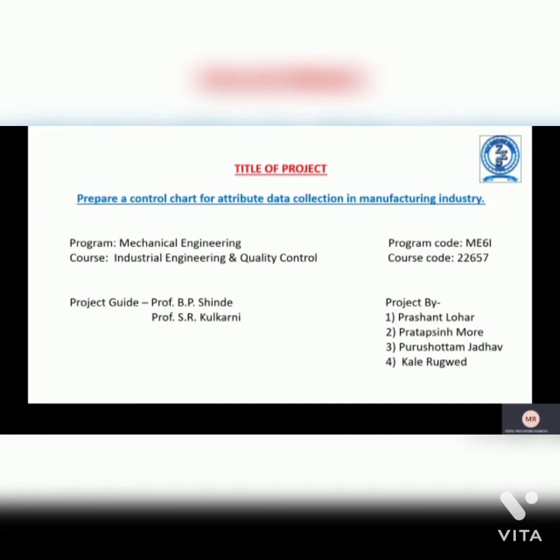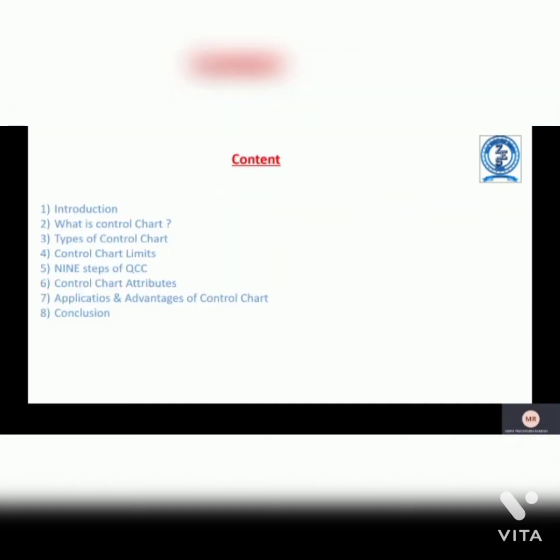Title of project: prepare a control chart for attribute data collection in manufacturing industry. Content: Introduction, What is Control Chart, Types of Control Chart, Control Chart Limits, Nine Steps of QCC, Control Chart Attributes, Applications and Advantages of Control Chart, and last, Conclusion.